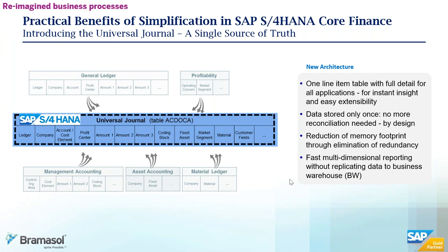What I love about this is the single source of truth and getting away from having to run different reports. Think about a scenario where you report to the CFO, the CFO asks you a question, and you say 'let me get back to you' because you have to pull another report based on customer data or vendor data. The Universal Journal eliminates that, cutting down on time and presenting the same single source of truth that everybody is sharing at a single time.